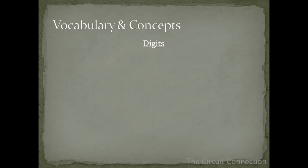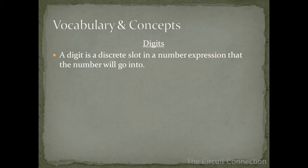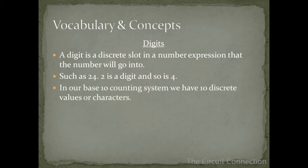So to start with digits. What's a digit? Well a digit is a discrete slot in a number expression that the number will go into such as 24. 2 is a digit and so is 4, so that makes 24 a two digit number. In our base 10 counting system we have 10 discrete values or characters. Those characters are 0, 1, 2, 3, 4, 5, 6, 7, 8, 9. If we counted up all of those characters it would give us a numerical value of 10.